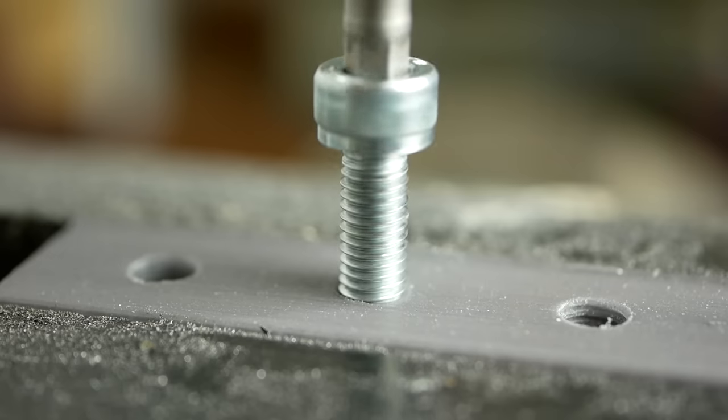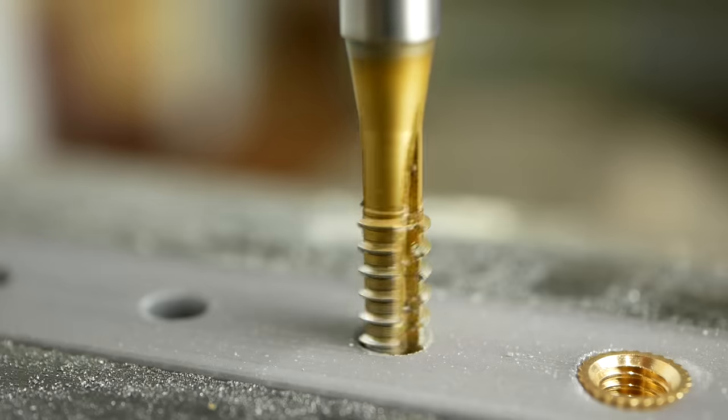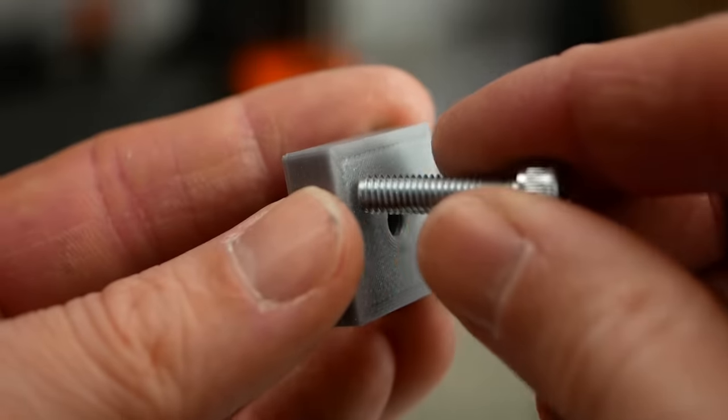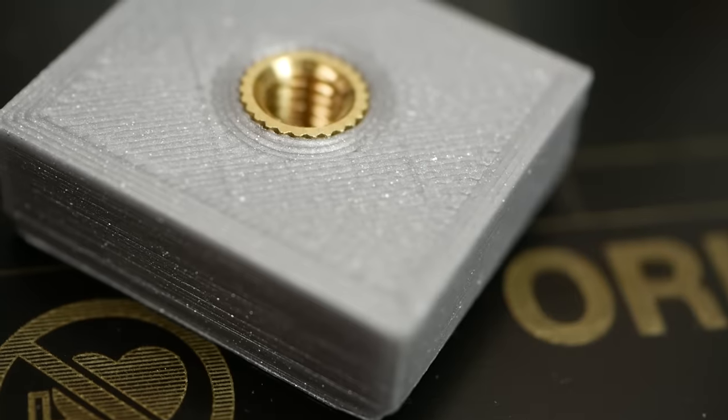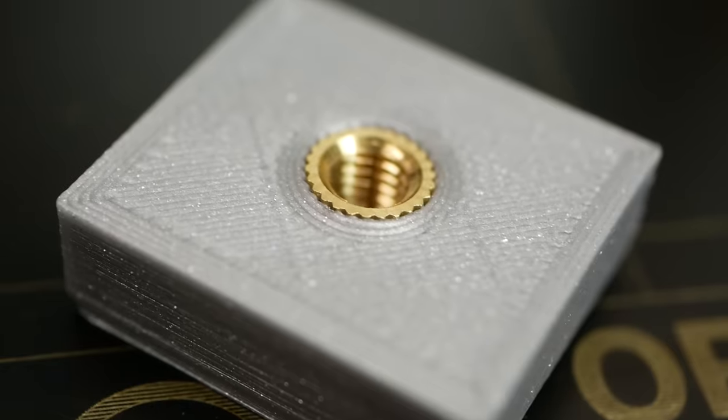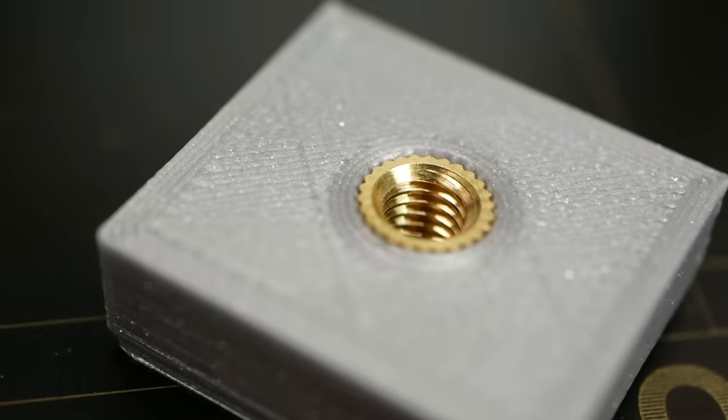Starting from directly screwing into a slightly undersized hole, to cutting threads with a proper tap or modeling and printing the thread itself, putting threaded inserts into your part is a way to add quite some value to the look and feel of your 3D print.